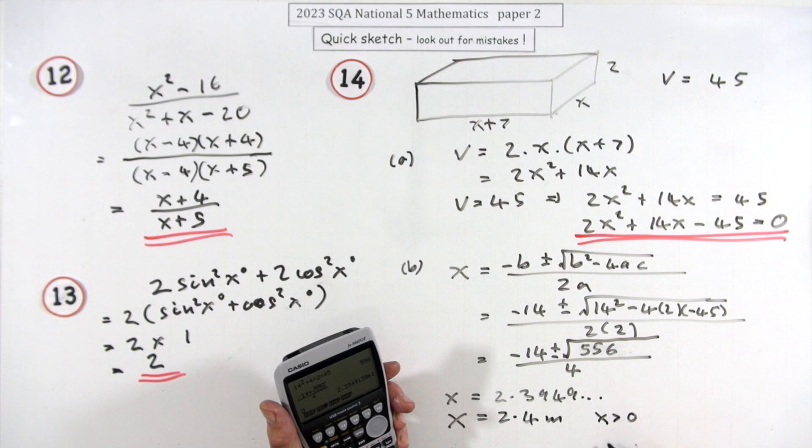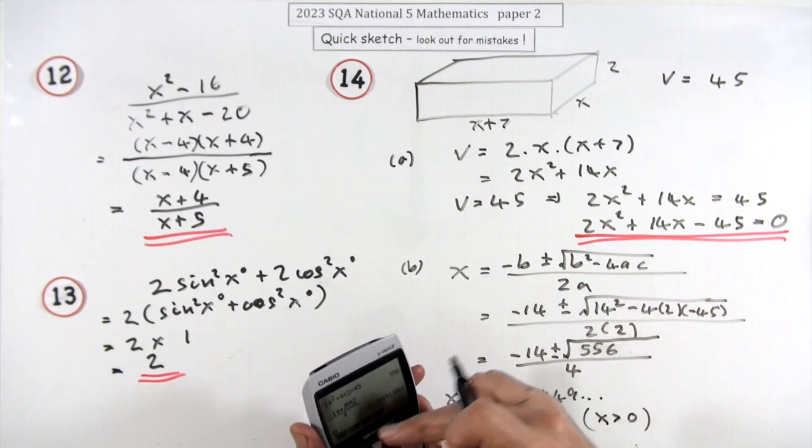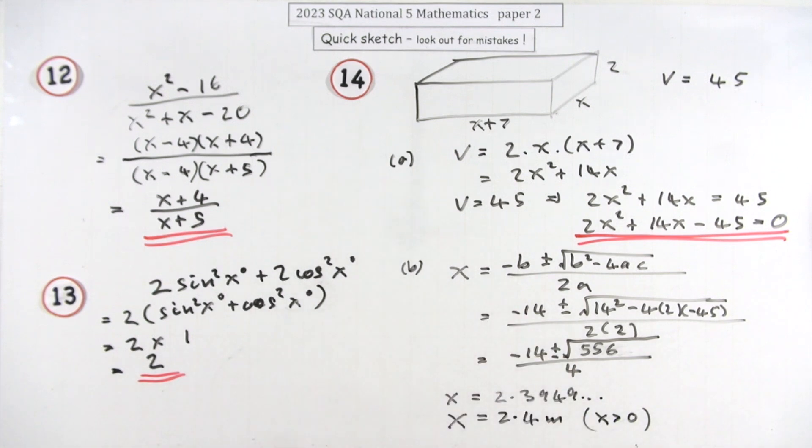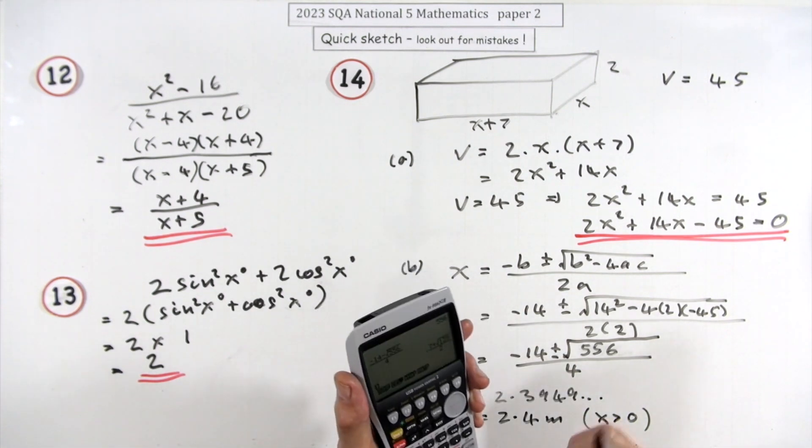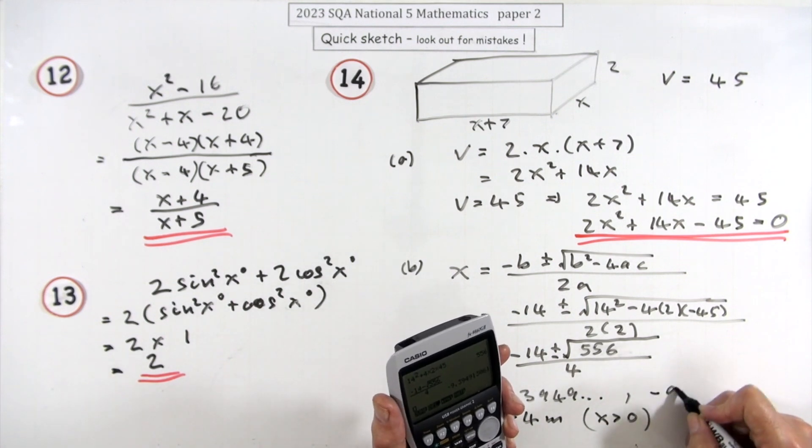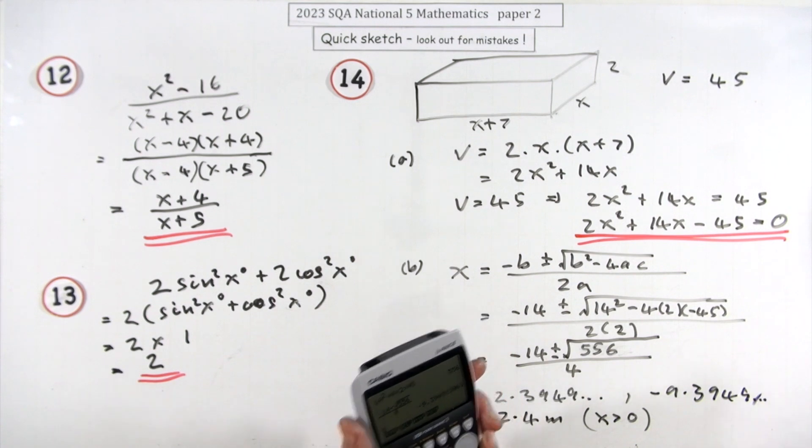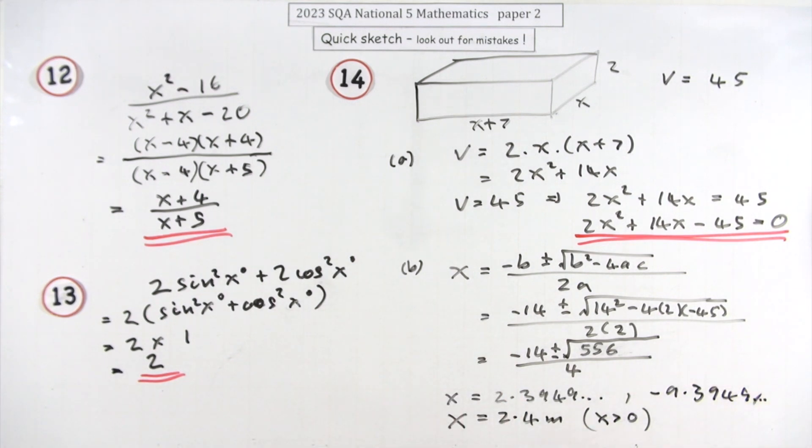So just typing in that one gives you 2.3949 and so on, which means x has to be, to one decimal place, 2.4 meters. Probably note x greater than zero. If you're feeling a bit curly, you could always put the other one in. Negative 9.3949 and so on, which of course it couldn't be.